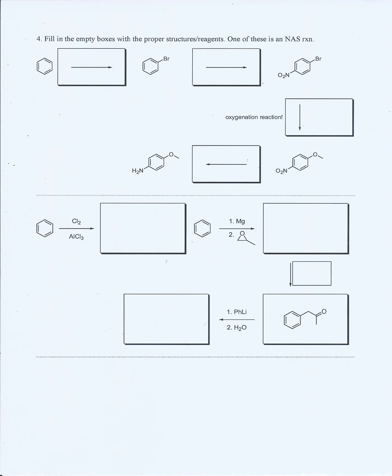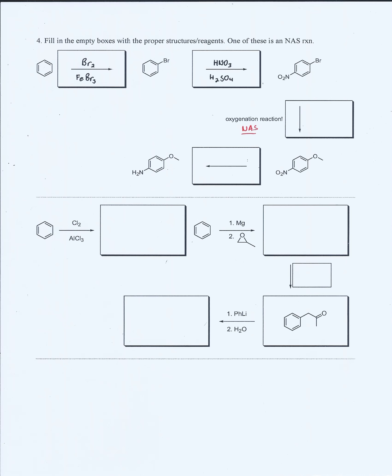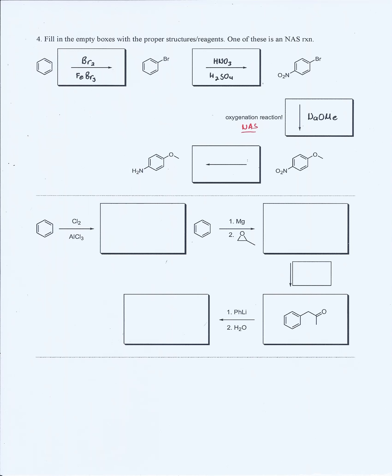For the fill-in Part A, they want us to fill in the reagents to get to the next step. For the first box, bromide was added so this must be a halogenation — remember you can use either FeBr3 or AlBr3. The next box shows nitration occurring at the para position because of the para-directing bromide, so you need HNO3 and H2SO4. The next box is an oxygenation reaction which is a nucleophilic substitution, so we would use NaOMe. For the final box, it turns a nitro into an amine which is a reduction of a nitro group, so here you would use Zn in HCl.